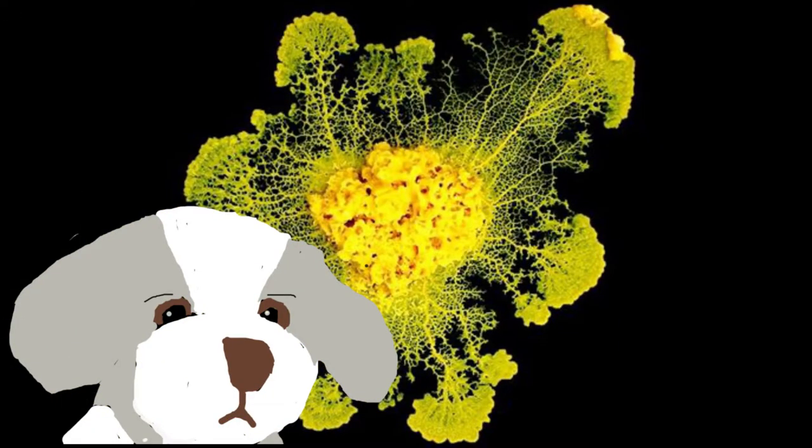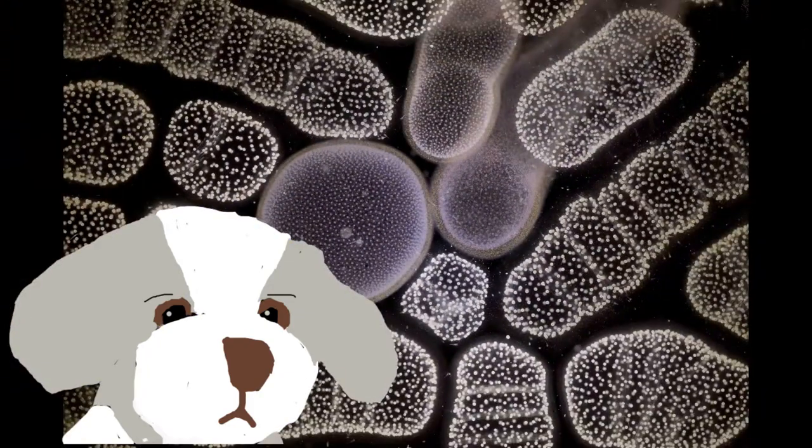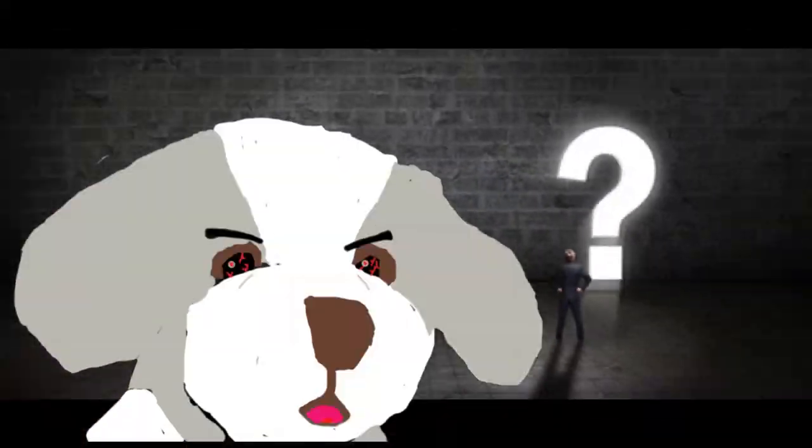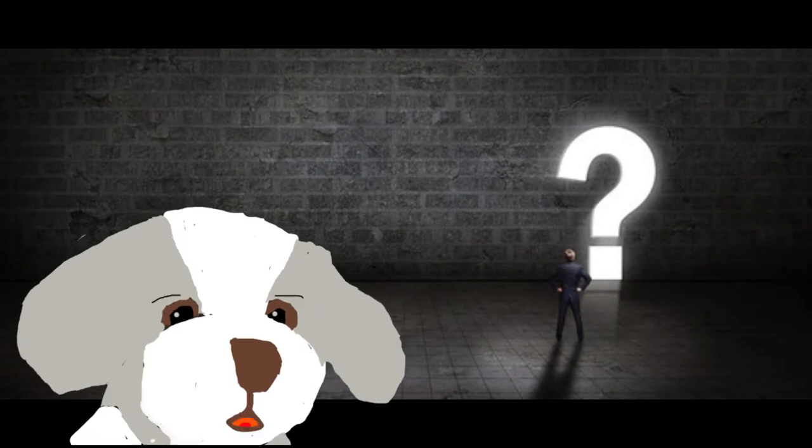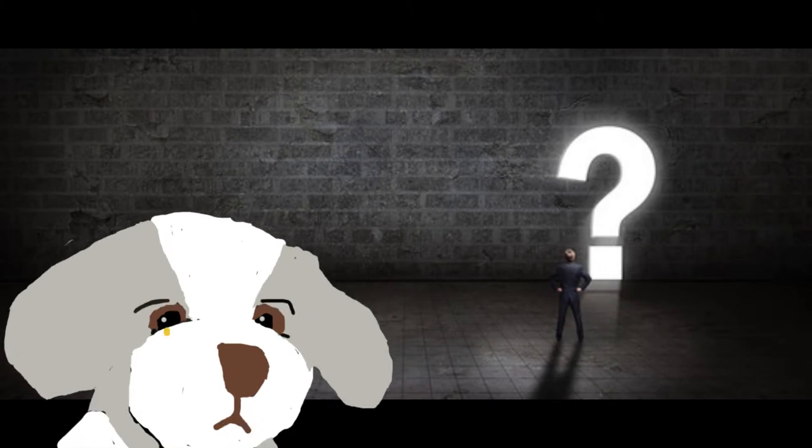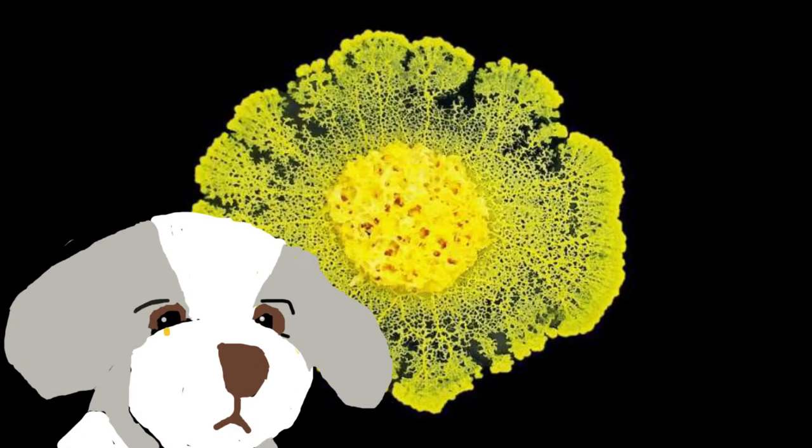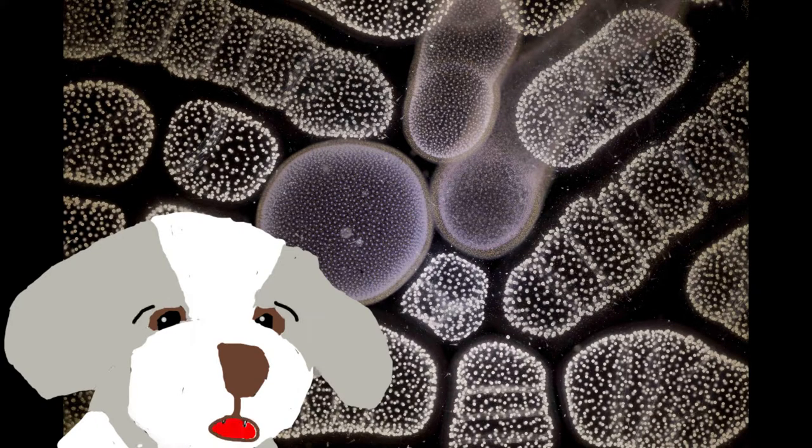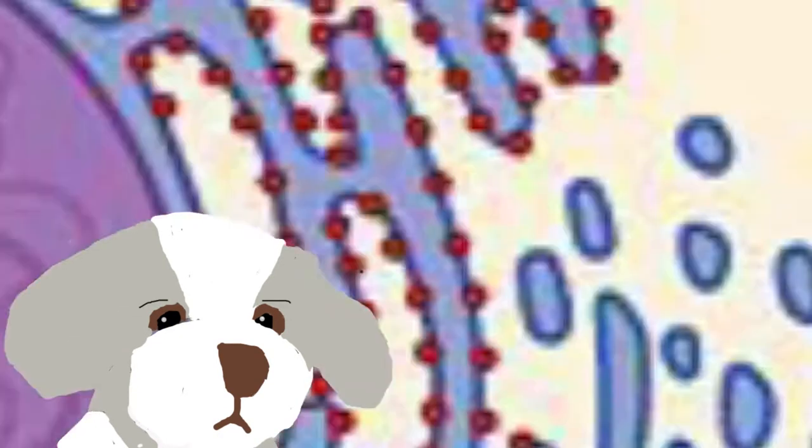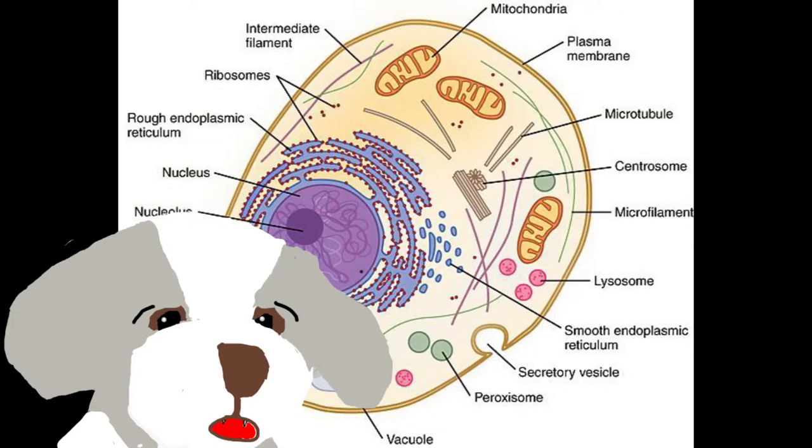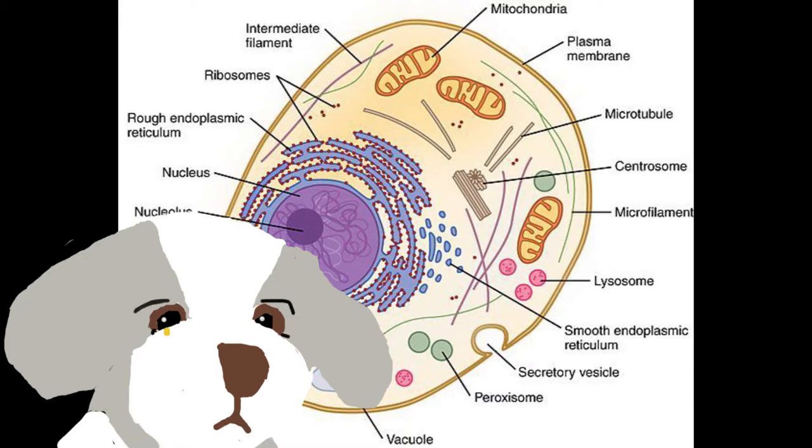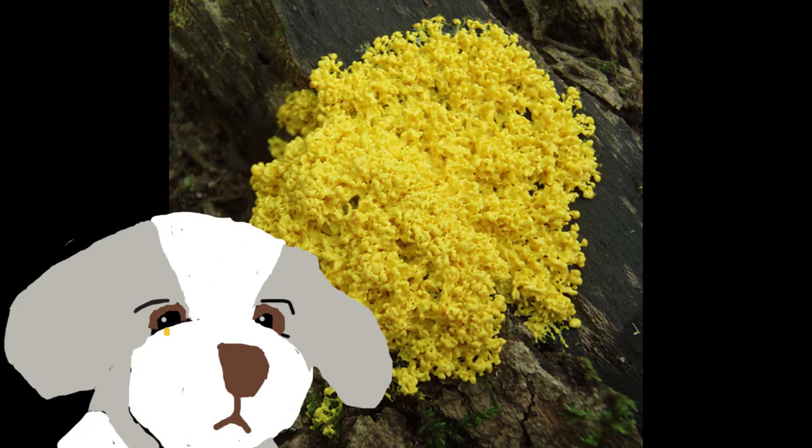Le Physarum polycephalum, nom parfaitement imprononçable, est un protozoaire. Encore un nom imprononçable. Je sens que le tryptique des noms imprononçables se prépare. On arrête ça tout de suite, je veux des mots simples. Ok, c'est bon. Le Blob est un protiste. C'est quoi un protiste? Les protistes sont des organismes eucaryotes unicellulaires. Les eucaryotes, ce sont les êtres vivants unis ou pluricellulaires dont leurs cellules possèdent un noyau. Ça marche. Bon, place au vif du sujet, les secrets du Blob.